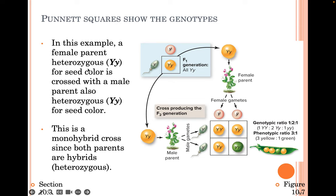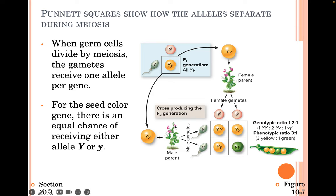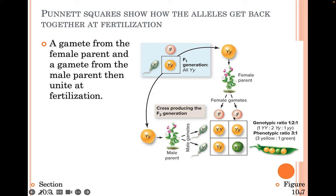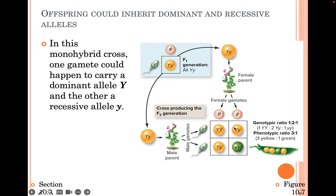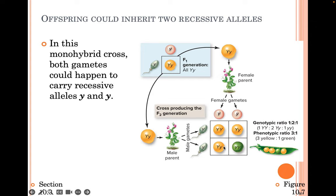This is a monohybrid cross since both parents are hybrids or heterozygous. When germ cells divide by meiosis, the gametes receive one allele per gene. For the seed color gene, there is an equal chance of receiving either a dominant Y or a recessive y. A gamete from the female parent and a gamete from the male parent unite at fertilization. In this monohybrid cross, both gametes could carry dominant alleles — homozygous dominant — one dominant and one recessive — heterozygous — or both recessive, yielding the green homozygous recessive individual.